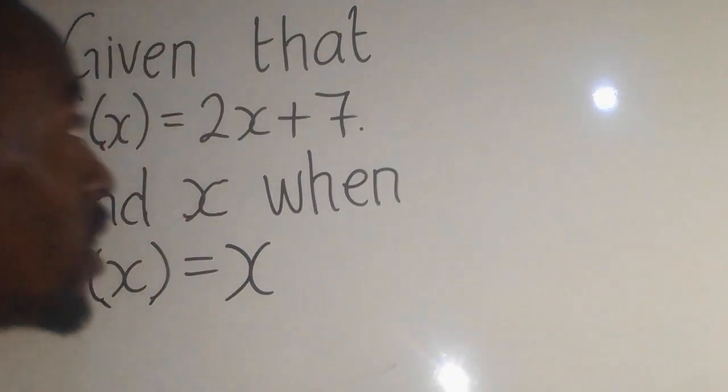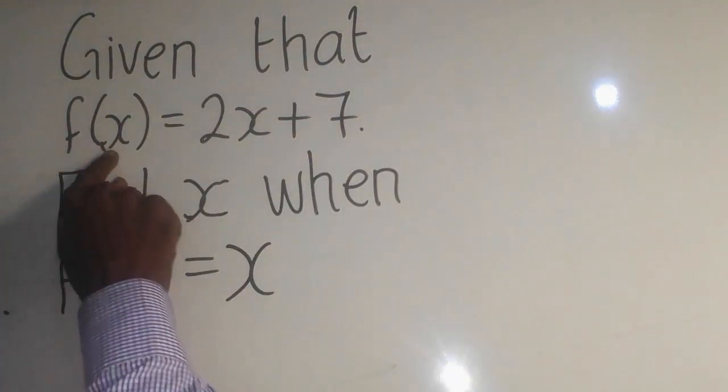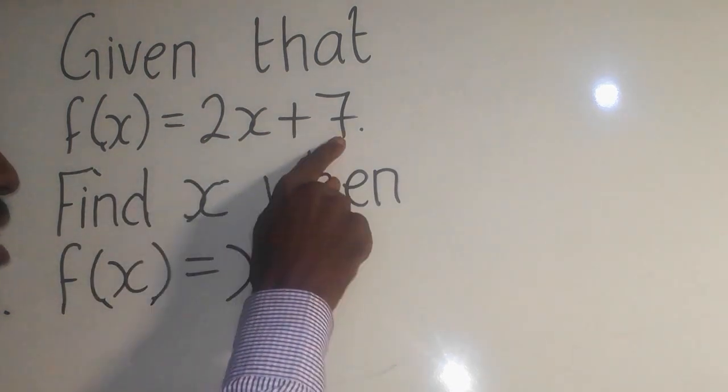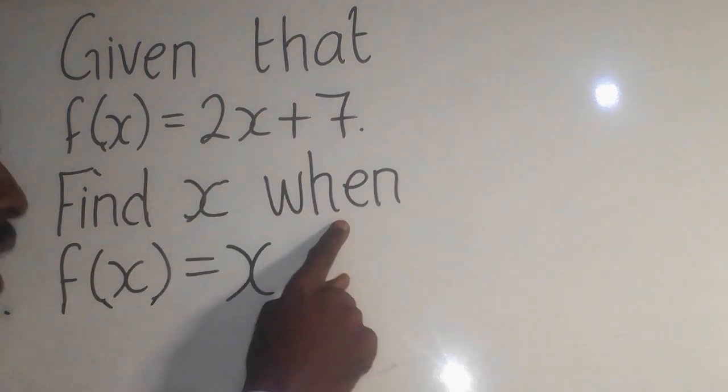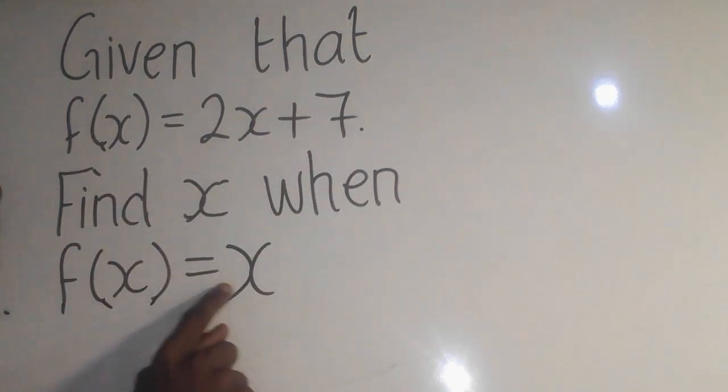A mathematics question that says: given that f(x) is equal to 2x plus 7, find x when f(x) is equal to x.